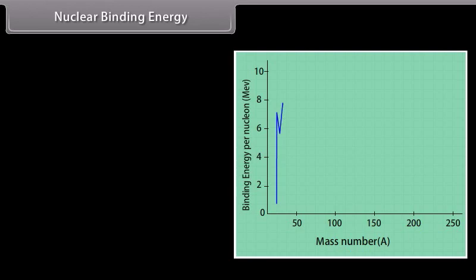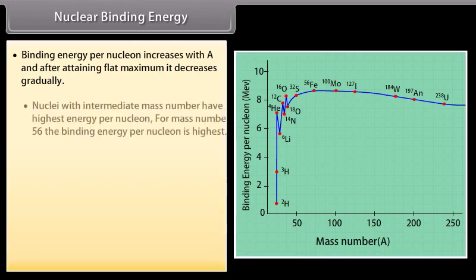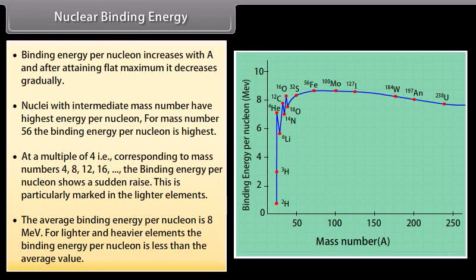From the graph we note that binding energy per nucleon increases with A and after retaining flat maximum it decreases gradually. Nuclei with intermediate mass number have highest energy per nucleon. For mass number 56 the binding energy per nucleon is highest. At a multiple of 4, that is corresponding to mass numbers 4, 8, 12, and 16, the binding energy per nucleon shows a sudden raise. This is particularly marked in the lighter elements. The average binding energy per nucleon is 8 MeV. For lighter and heavier elements the binding energy per nucleon is less than the average value.